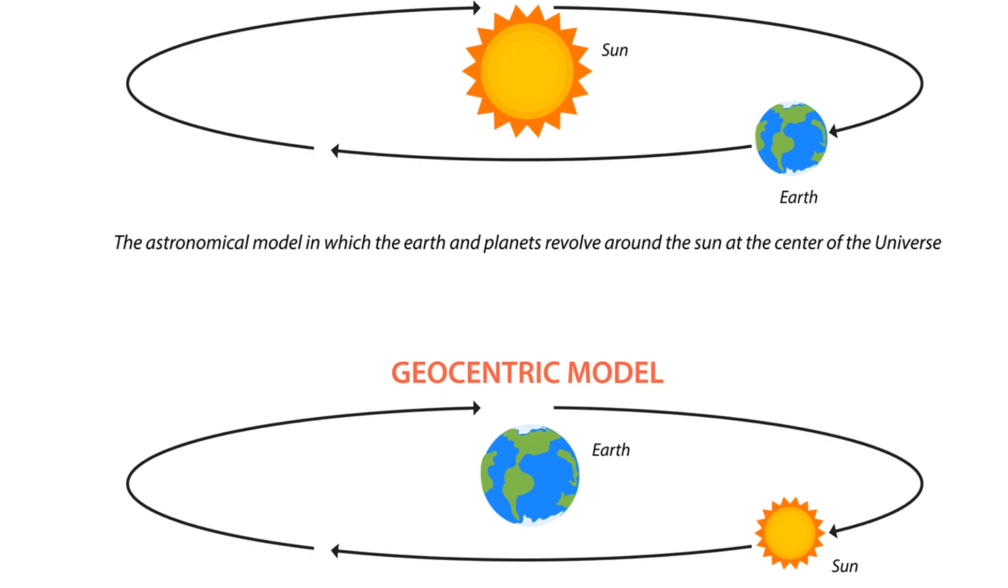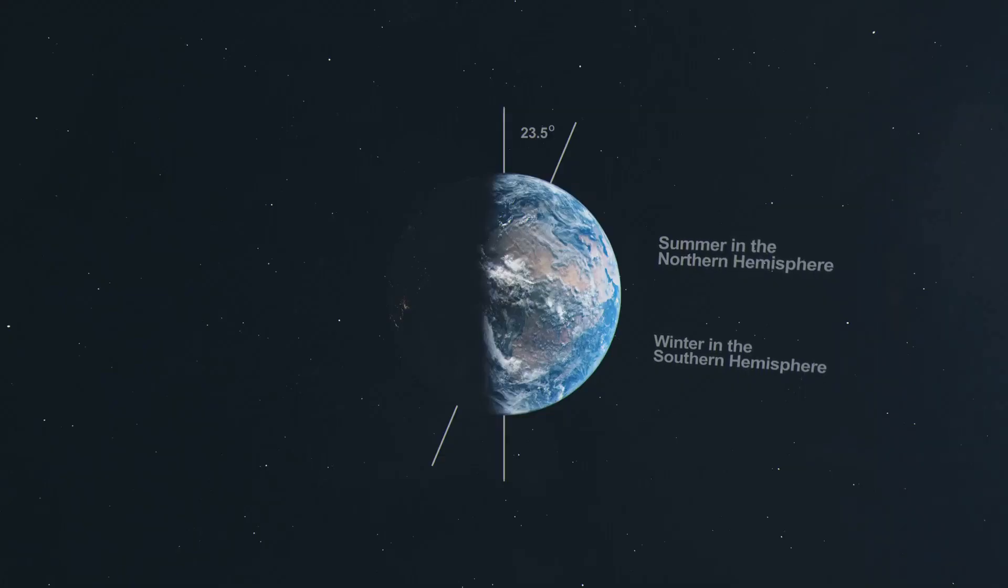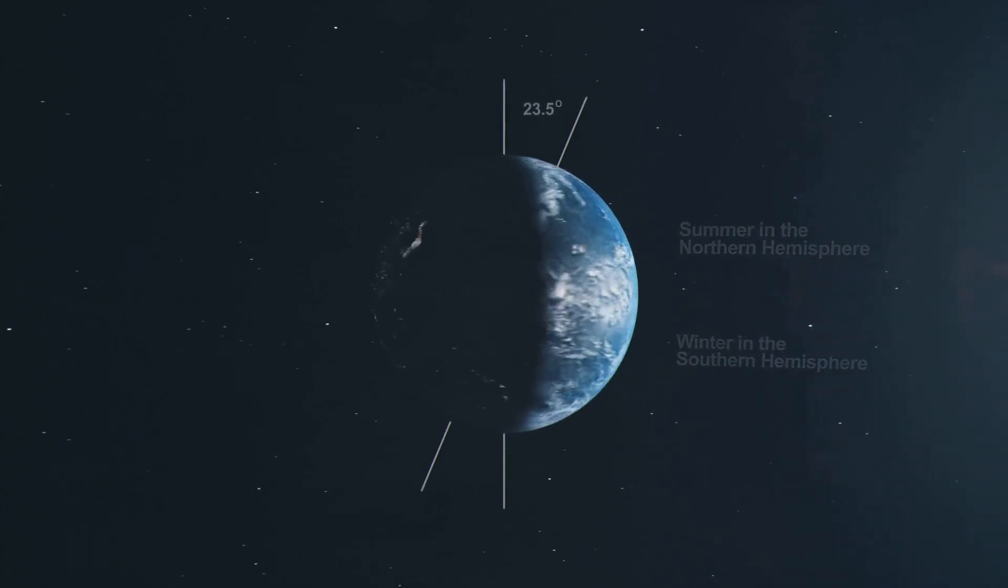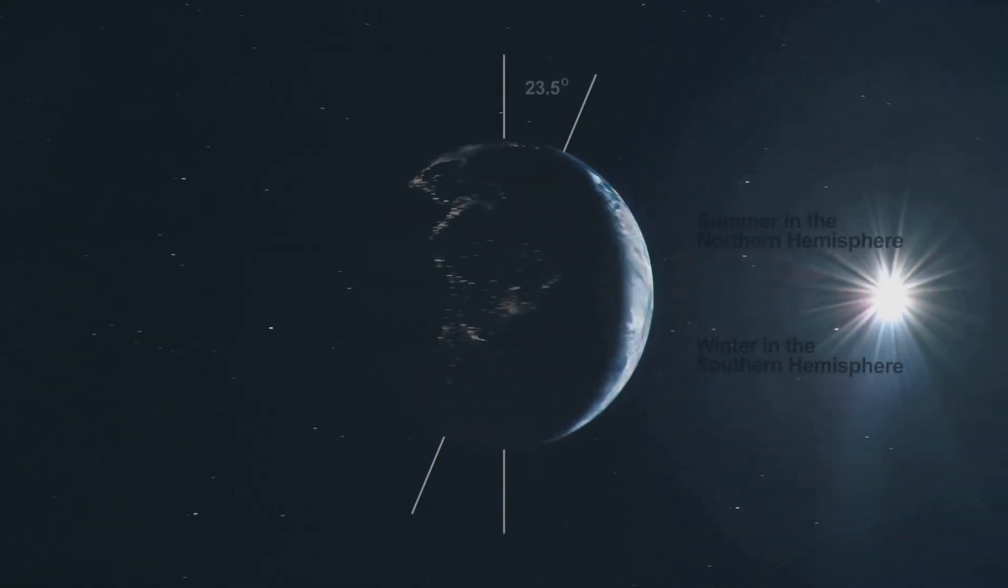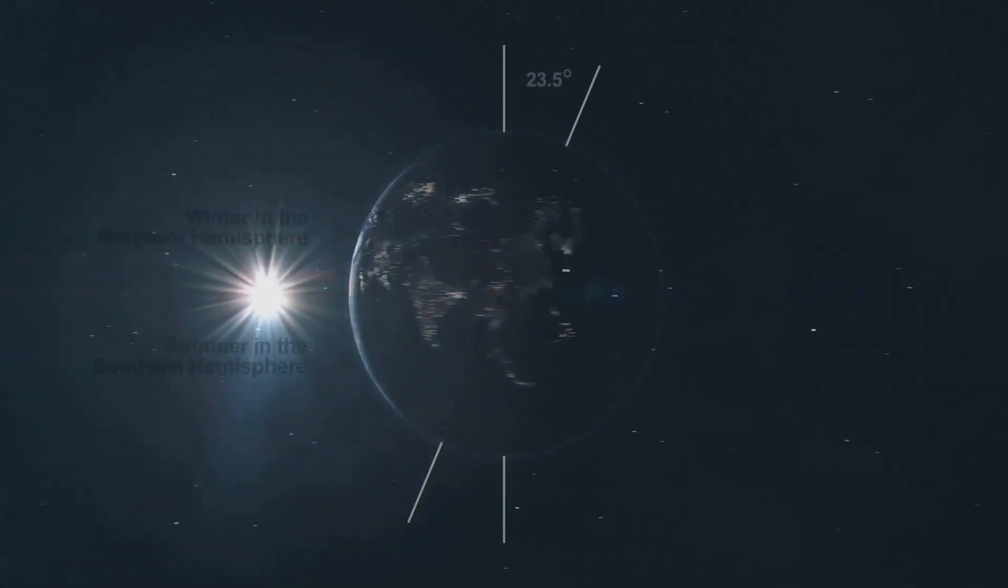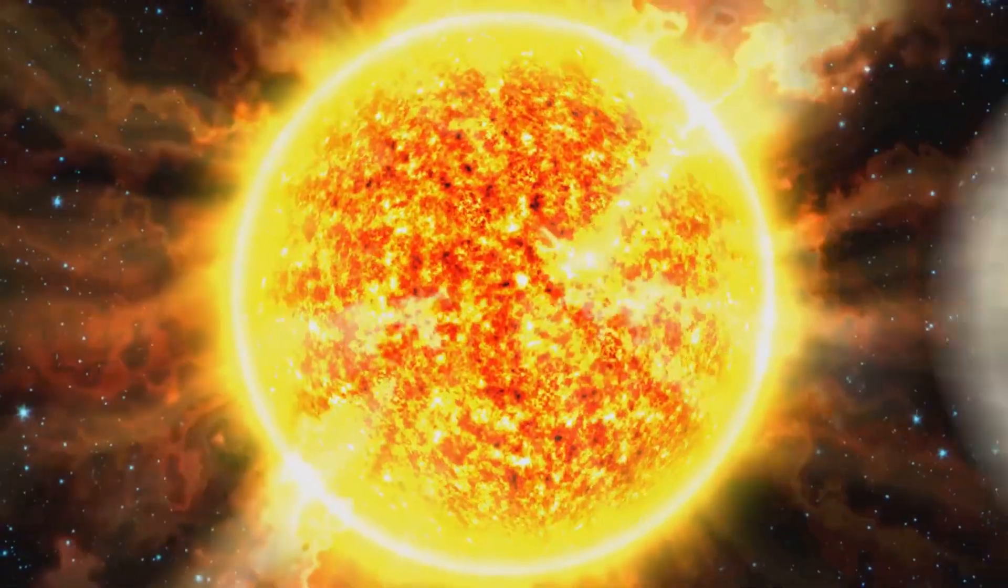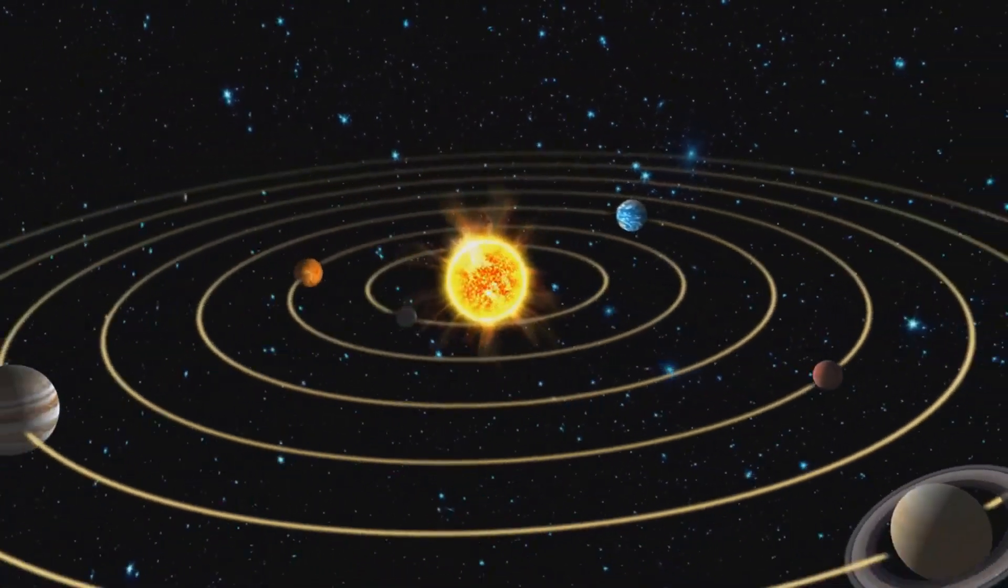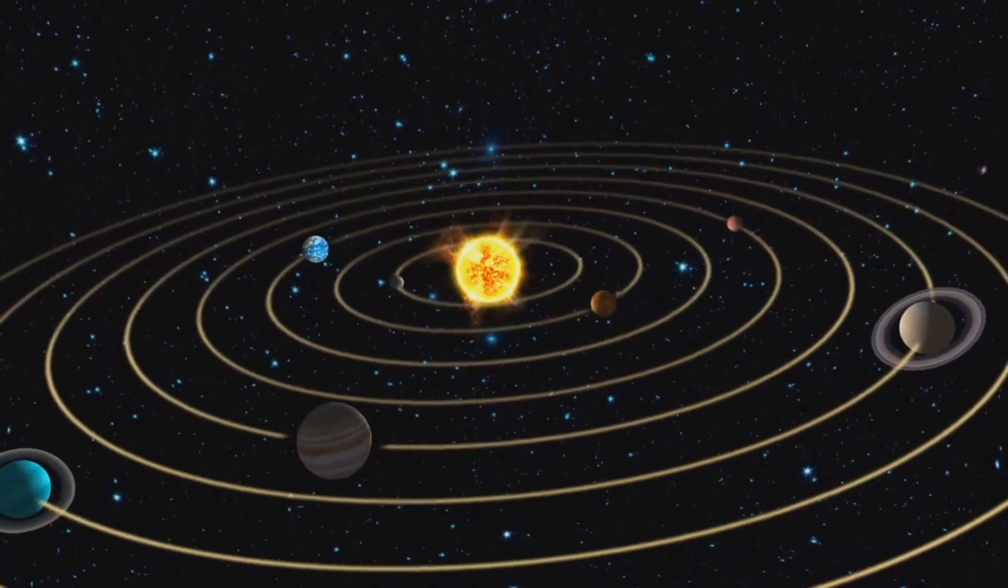Copernicus was the first to propose a revolutionary model of the universe, one that dared to displace earth from the center. This heliocentric model, as it came to be known, placed the sun at the center with earth and the other planets orbiting around it. This was a stark contrast to the prevailing geocentric model of the time, which placed earth at the center of the universe.